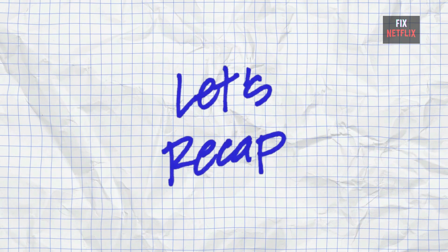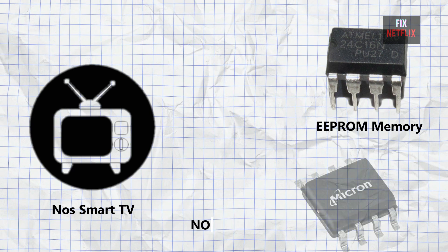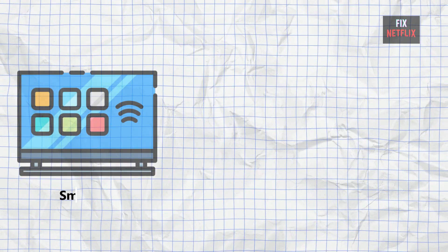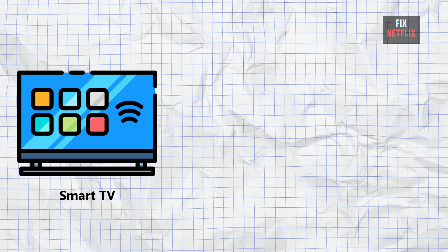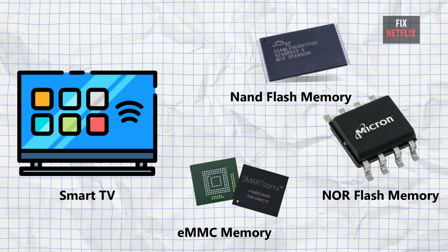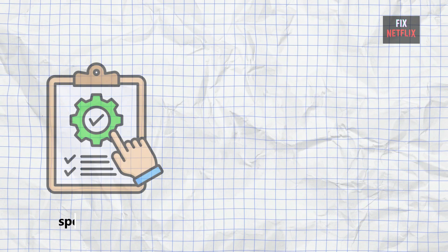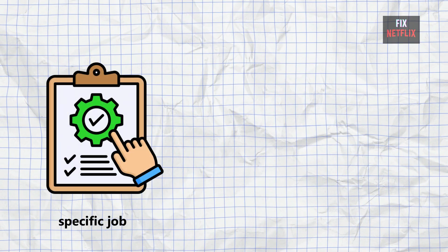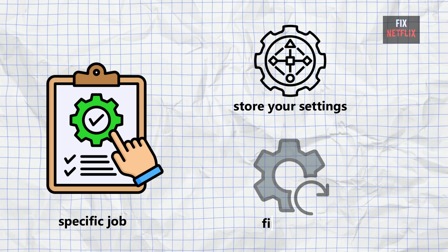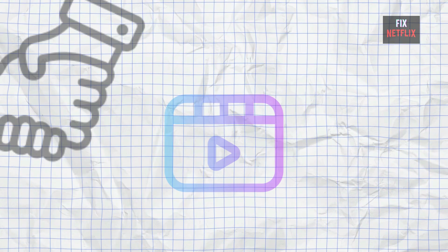Let's sum it all up. Non-smart TVs use EEPROM plus NOR flash memory. Smart TVs used to use NOR plus NAND, but now they mostly use eMMC. Each memory chip has a specific job — some store your settings, some load the firmware, others help the system boot correctly.